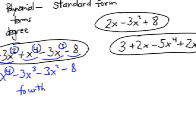On the right, what is the highest power? Yes, x to the 4th. So, that term would come first, negative 5x to the 4th, and then what's next? The 2x to the 3rd, and then the 2x, and then the 3.